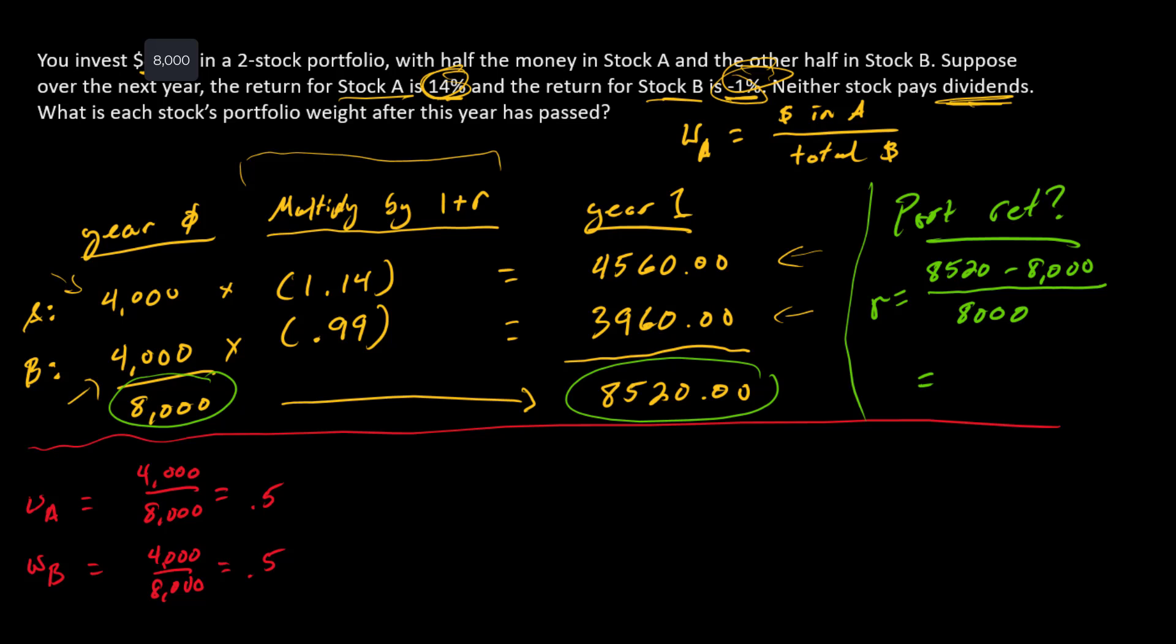Which equals 0.065. This portfolio had a 6.5% return. We have positive here, negative here. Since it was split between the two, the portfolio return is going to be somewhere between those two numbers, and it is.